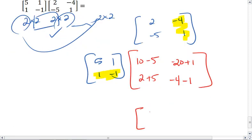So again, simplify, we get 5, negative 19, 7, negative 5.